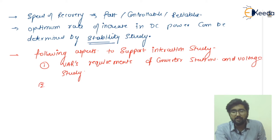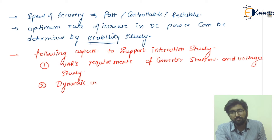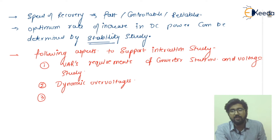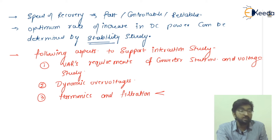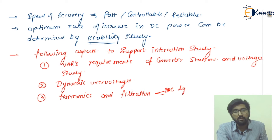The second point is related to dynamic overvoltages. The third point is harmonics and filtration — including DC type filters and AC type filters.